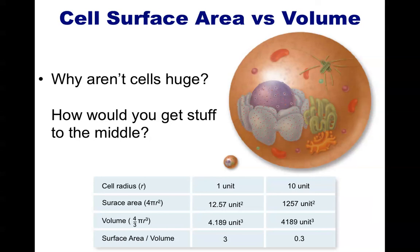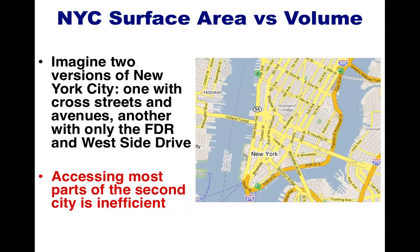For one more example to drive this point home, think about Manhattan in New York City. We'll pretend the city is a cell, and that the surface area, or the membranes, will be the roads. If you had roads that went into the middle, it wouldn't be difficult to get to spots in the middle of the city, like Washington Square Park. However, if the only membrane or surface available was the outside — or to use the city analogy, the only roads available were the FDR and the West Side Highway — it would be really tough to get to the middle of the city.